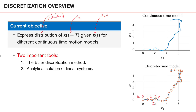We will do this for a variety of different continuous time motion models in later lectures. However, the focus of this lecture is to introduce two important results. The first result is the Euler discretization method, which is an approximative method that is quite simple to use. The second result is an analytical solution of linear and time-invariant state-space models, which gives us an exact expression.